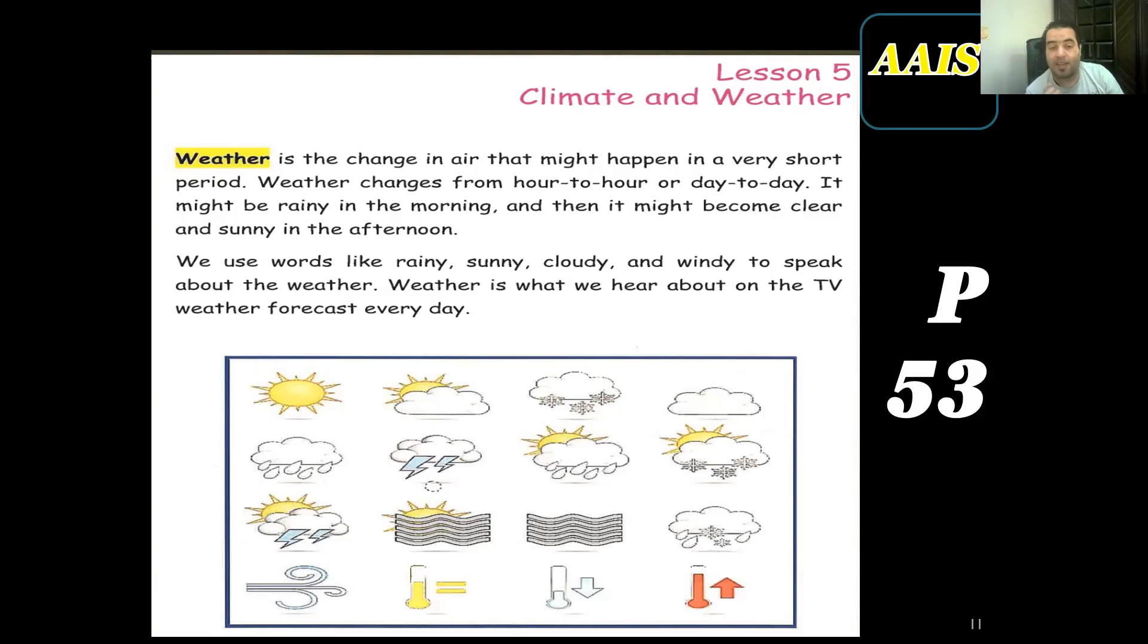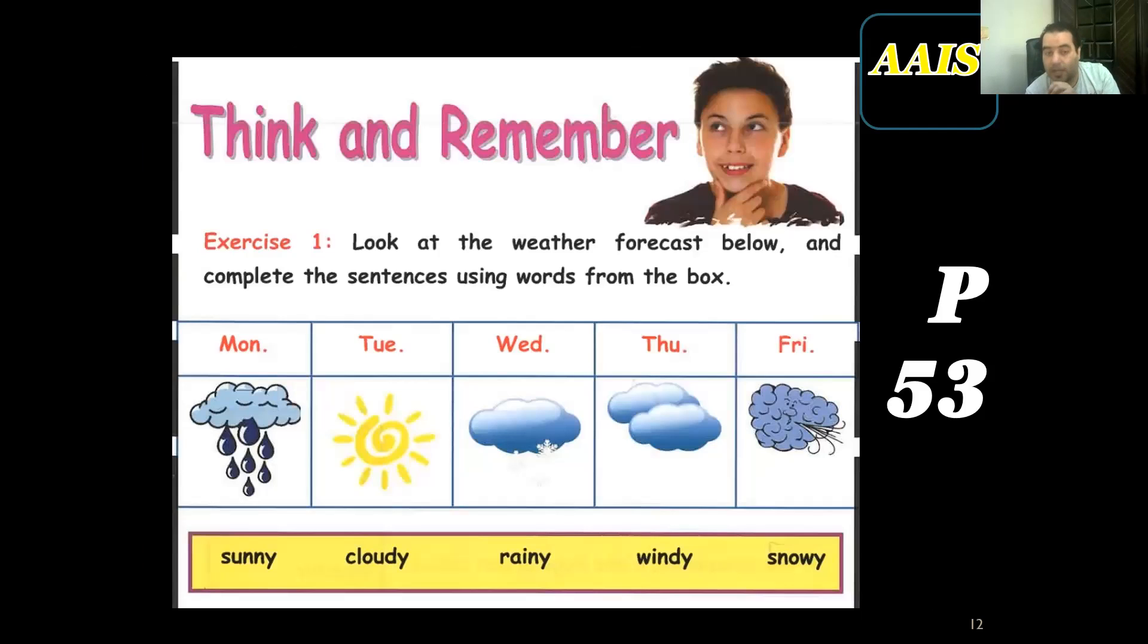Then we come to this page which is exercise one. Look at the weather forecast below and complete the sentences using words from the box. We have different weather conditions according to the day. On Monday I guess it's rainy, but on Tuesday it's sunny. On Thursday it's cloudy somehow, and on Wednesday it's snowy because I see some snow marks. Here I guess this is windy. All those words are adjectives. They come from the noun: if you have too much sun then it's sunny, if you have too many clouds then it's cloudy, if you have too much rain then it's rainy, when you have too much wind this is windy, and snow is snowy.